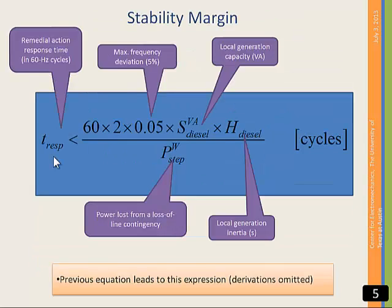After some derivations we can arrive at this expression. This expression predicts the time there is to respond to a loss of power contingency, yet keeping the frequency bounded. The 60 converts units of seconds to cycles. The 0.05 is the maximum frequency deviation.